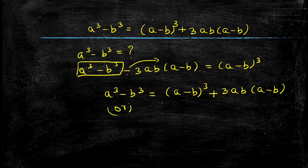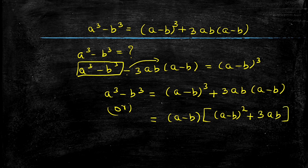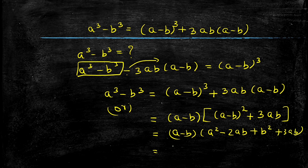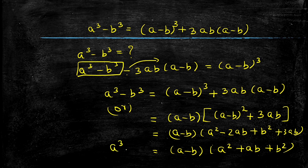The other way of writing it: if I take a minus b as the common term outside, I am left with a minus b the whole square plus 3ab. Expanding gives a minus b into a square minus 2ab plus b square plus 3ab, which simplifies to a minus b into a square plus ab plus b square. So that is a cube minus b cube. These are all the cubic identities covered; the examples will be in the next tutorial.